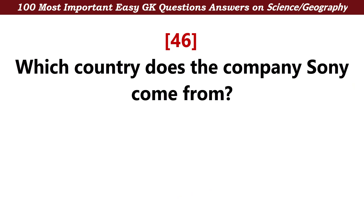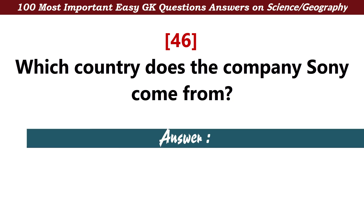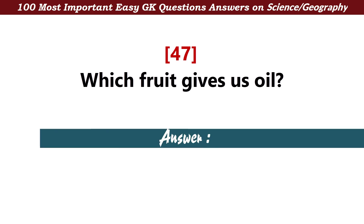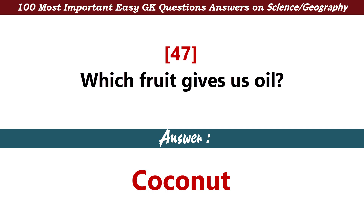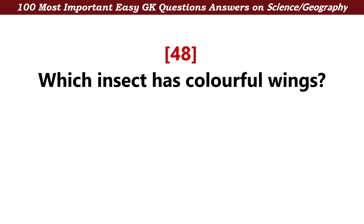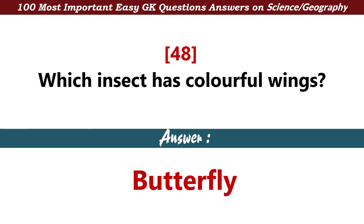Which country does the company Sony come from? Answer: Japan. Which fruit gives us oil? Answer: Coconut. Which insect has colorful wings? Answer: Butterfly.